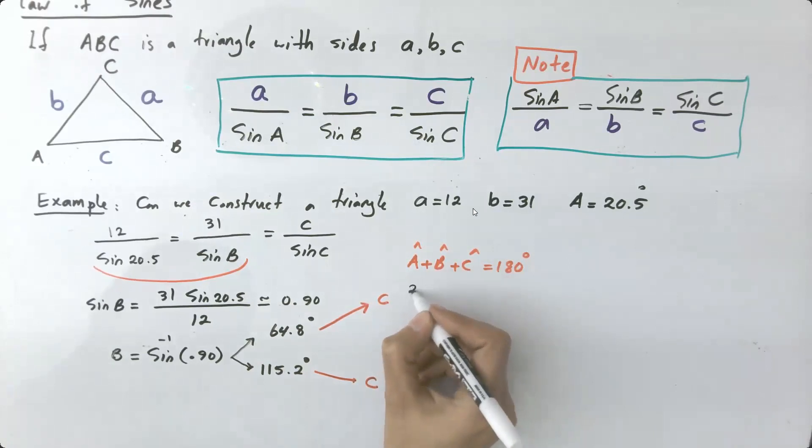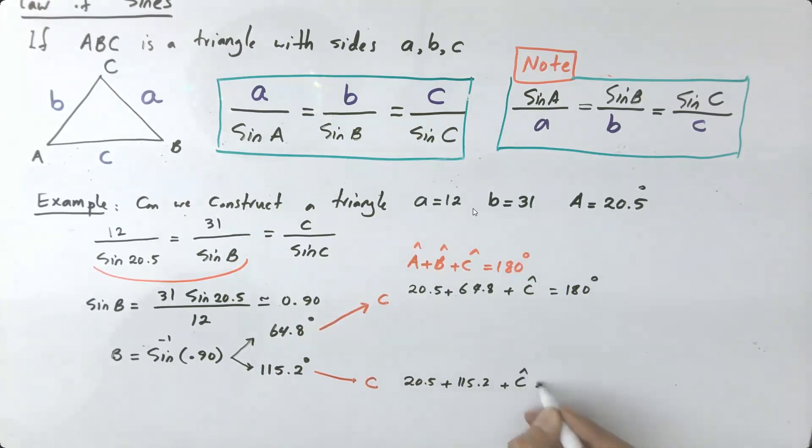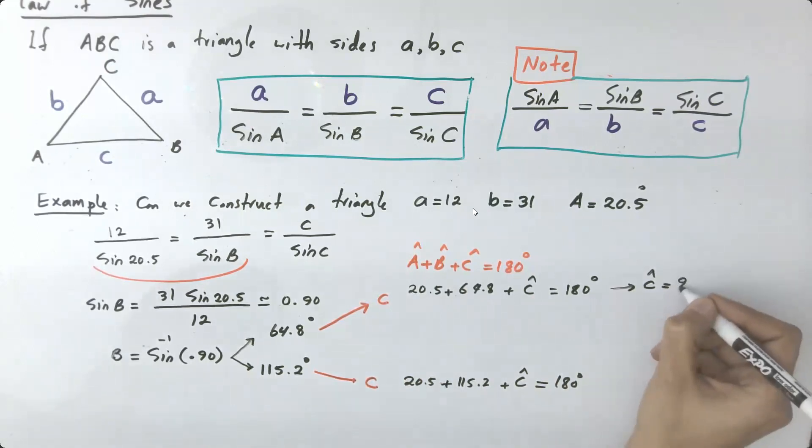So what is my A? A is 20.5 plus B 64.8 plus C equals 180 degrees. But in the second scenario, if my B is 115.2 degrees, I have 20.5 for my A plus B is 115.2 plus C is missing, which is equal to 180 degrees. Very good. So if my B is equal to 64.8, then my C becomes 94.7 degrees. However, if C is computed from the second equation, your C is 44.3.